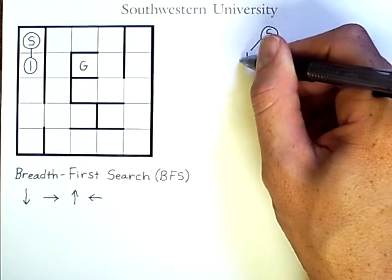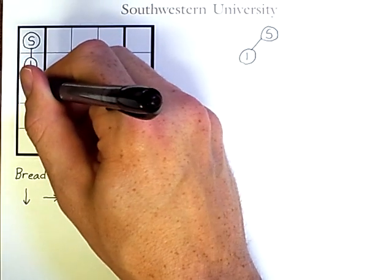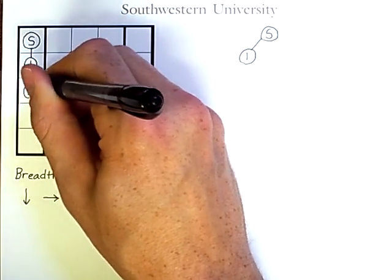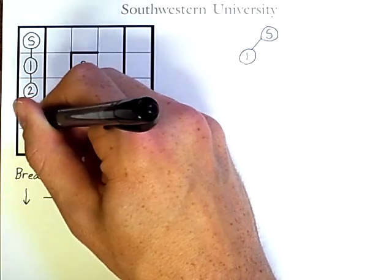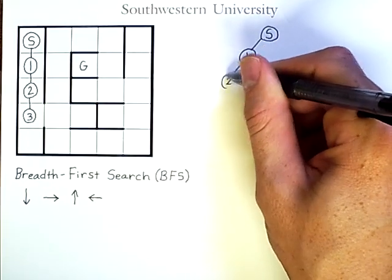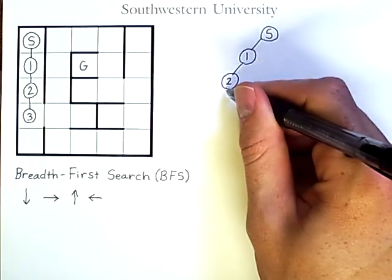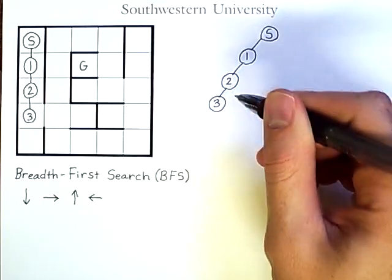I'll add that to the tree as well. And that is also true at the next state, and at the next state. We have one, two, and three. Now, here's where things begin to differ slightly.